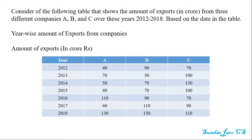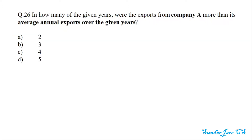Consider the following table that shows the amount of export in crore rupees from three different companies A, B, and C over the years 2012 to 2018. Based on the data in the table, the first question is: in how many of the given years were the exports from Company A more than its average annual export over the given years?